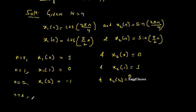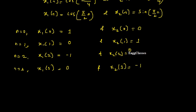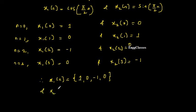For n = 3: x1(3) = cos(3π/2) = 0. If you don't know how to remember these values, use a calculator in radians mode. Similarly, x2(3) = sin(3π/2) = −1. So now we have x1(n) and x2(n) as four discrete samples: x1(n) = {1, 0, −1, 0} and x2(n) = {0, 1, 0, −1}.